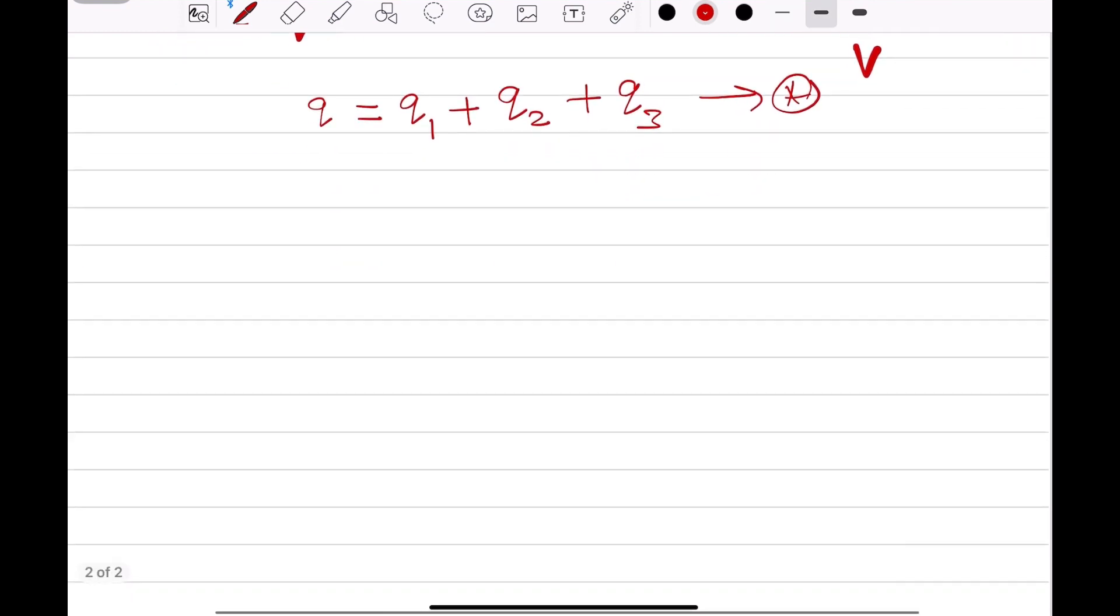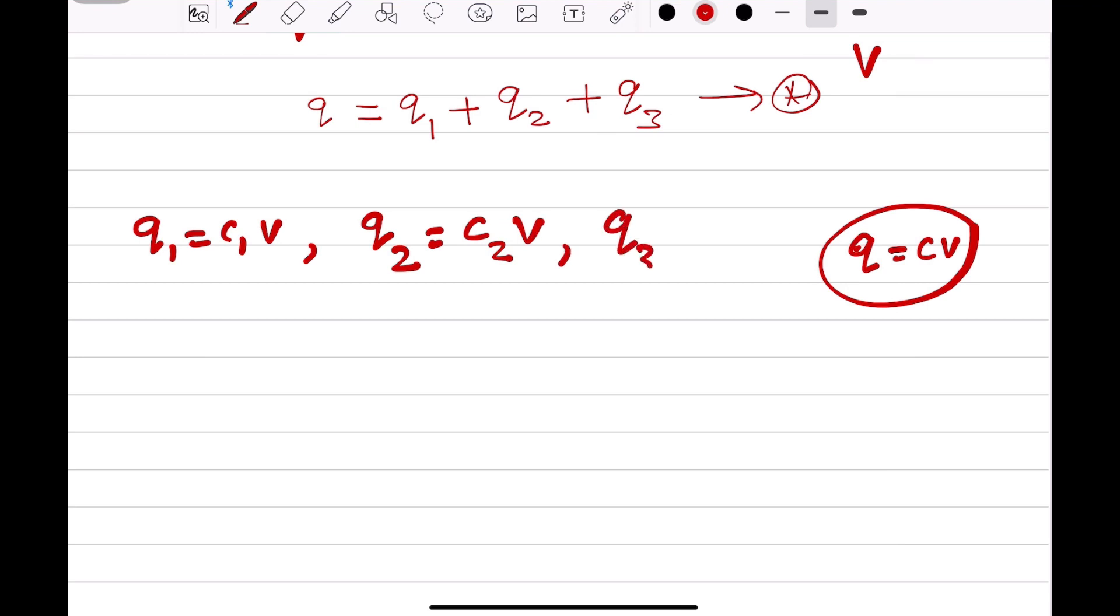Now, we know that from the equation Q is equal to CV, we can write Q1 is equal to C1V, Q2 is equal to C2V, and Q3 is equal to C3 into V.